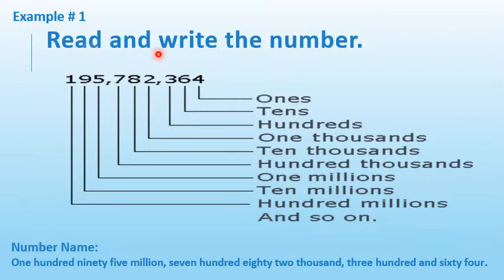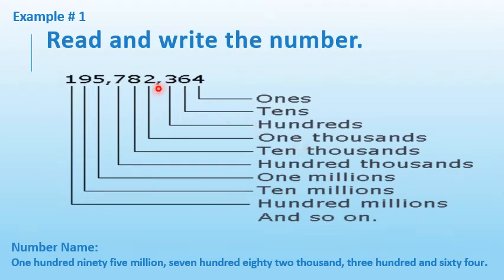Example one: read and write the number. We begin from the right and insert a comma after every three digits, dividing the number into three periods — ones, thousands, and millions. In the ones period: four in the ones place, six in the tens place, three in the hundreds place. In the thousands period: two in the one-thousands place, eight in the ten-thousands place, seven in the hundred-thousands place. In the millions period: five in the one-millions place, nine in the ten-millions place, one in the hundred-millions place. The number name is: one hundred ninety-five million, seven hundred eighty-two thousand, three hundred and sixty-four.